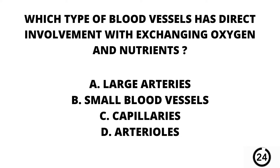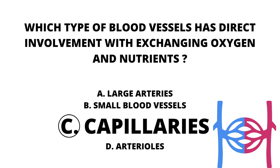Question number eighteen. Which type of blood vessels has direct involvement with exchanging oxygen and nutrients? A. Large arteries. B. Small blood vessels. C. Capillaries. Or D. Arterioles. Our answer here is C. Capillaries.